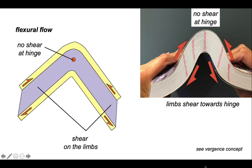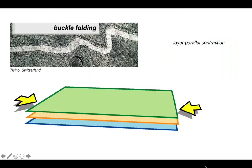So we've got three mechanisms by which the layering can deform to create a fold. Now let's take that forward and look at buckle folding. Buckling is formed by layer parallel contraction, as you can see on the cartoon.